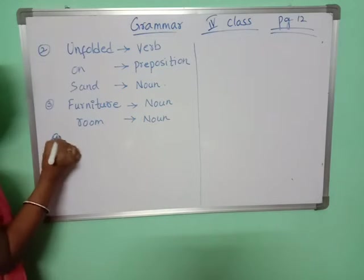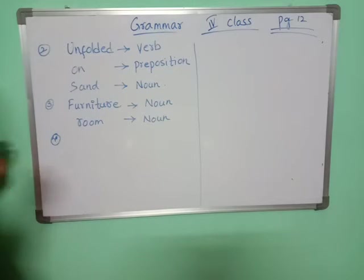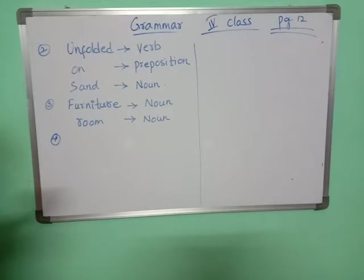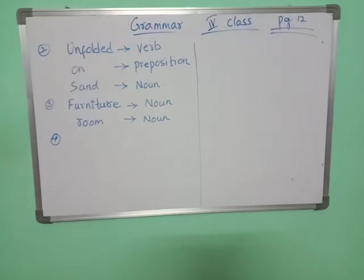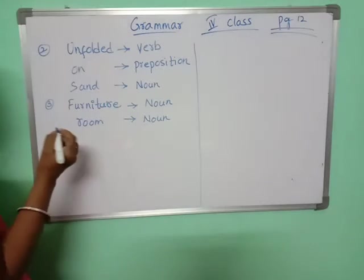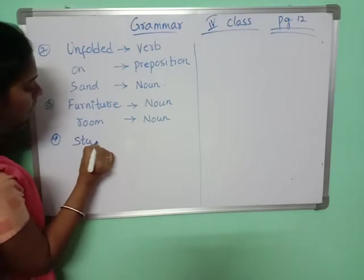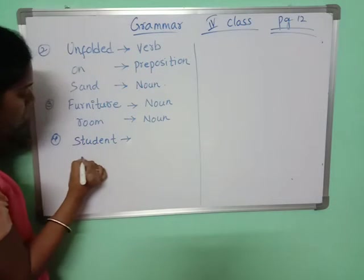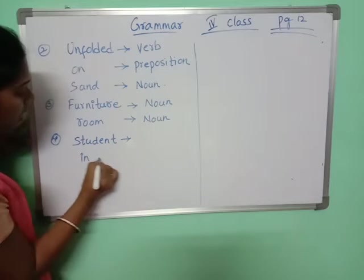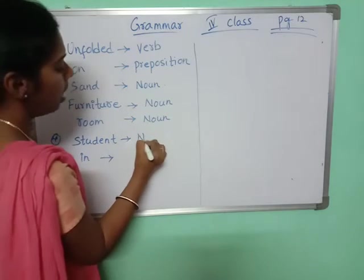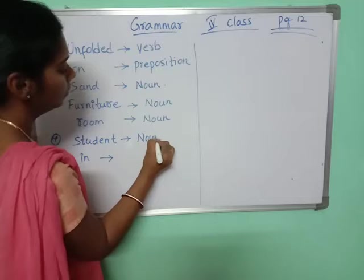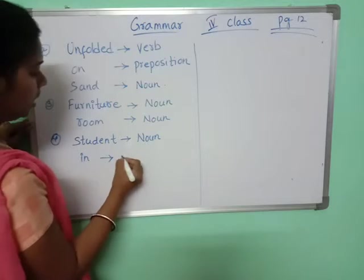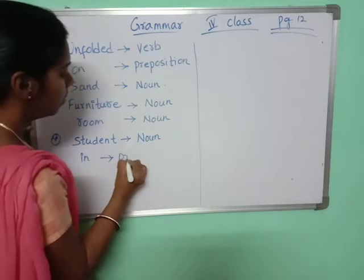Fourth one: A student sat down in her seat. In this sentence, 'student' is underlined and 'in' is underlined. 'Student' is a noun and 'in' is a preposition.